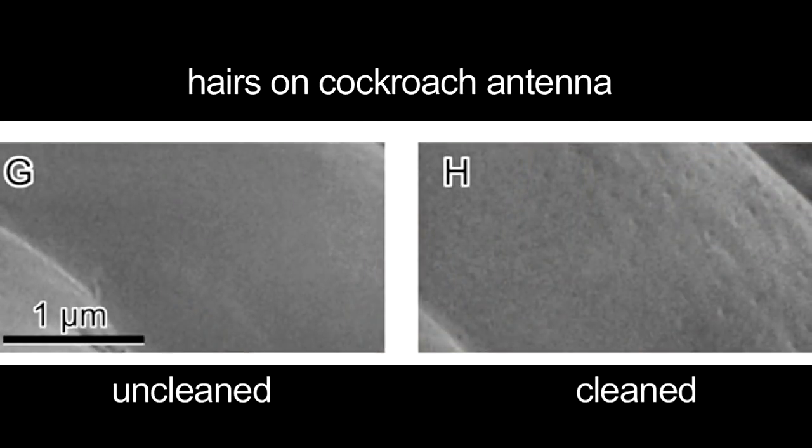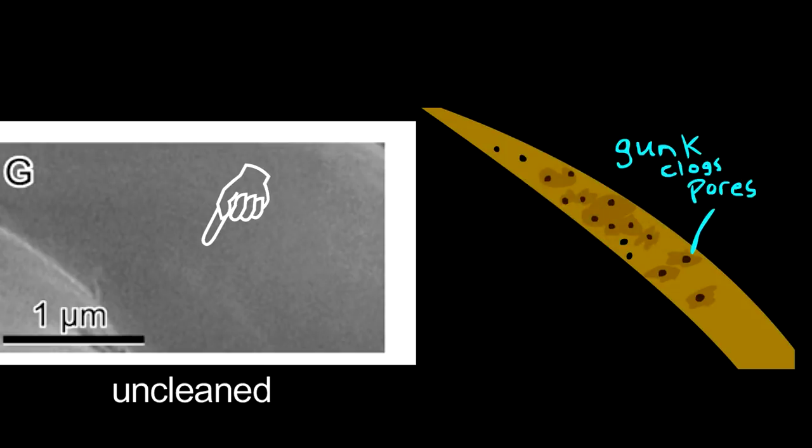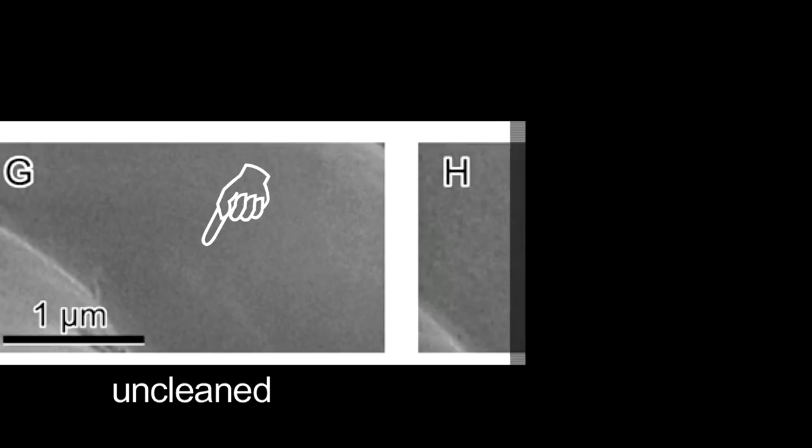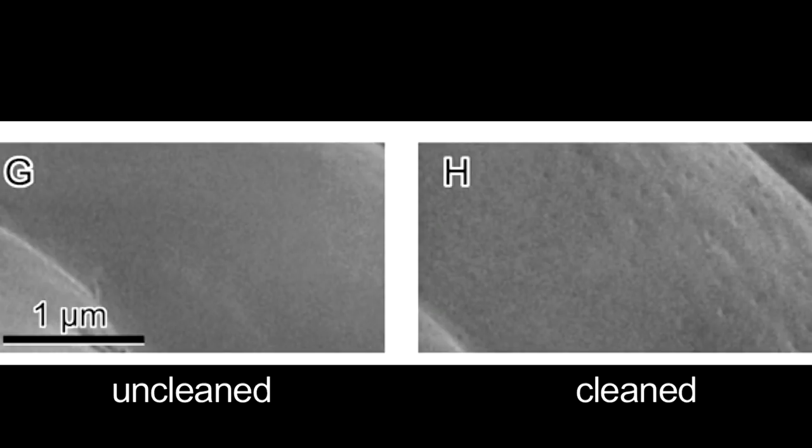As you zoom in and look at these little hairs in very high magnification, you see this very smooth surface. And that smooth surface is the hydrocarbons occluding the cuticular pores that we should be seeing on the antennae. And clogged pores aren't just a hygiene issue.